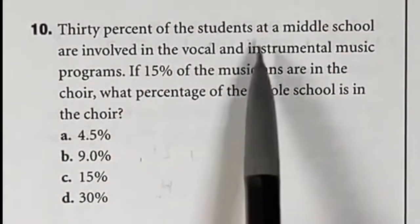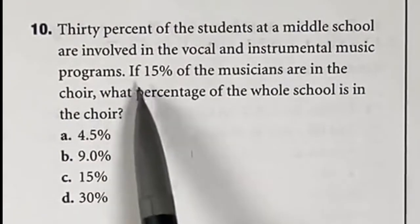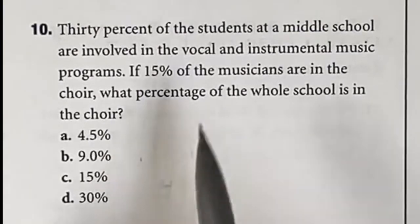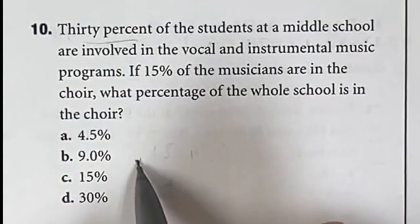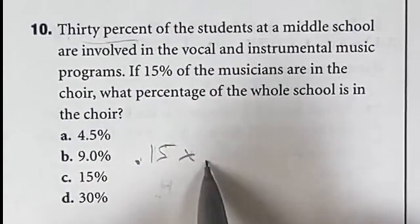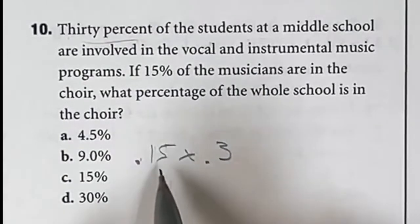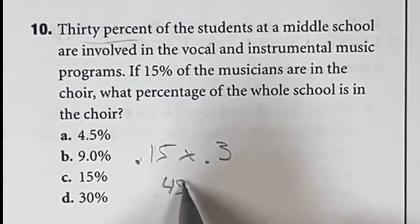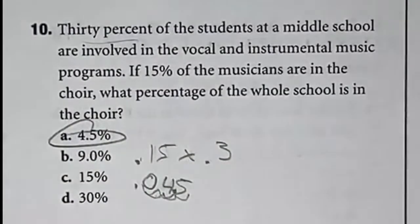Number 10 says 30% of the entire school is in a musical program, and 15% of those 30% are in the choir. What percent of the whole school is in the choir? We need 15% of 30%, so we multiply the two percents together: 0.15 times 0.30. 15 times 3 is 45, then move the decimal three places to get 0.045. To convert back to a percent, move it two places to give a final answer of 4.5%.